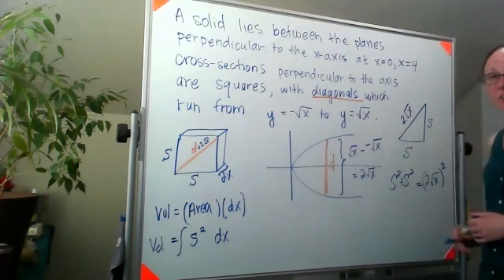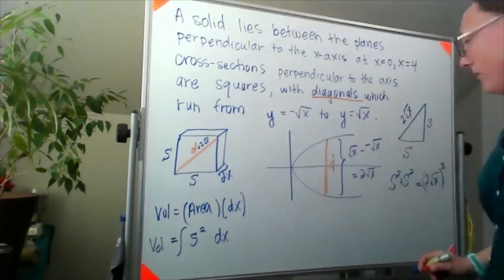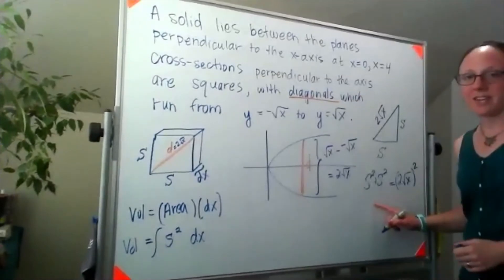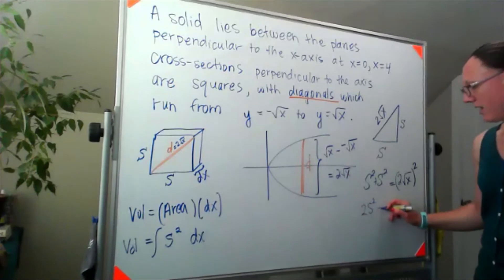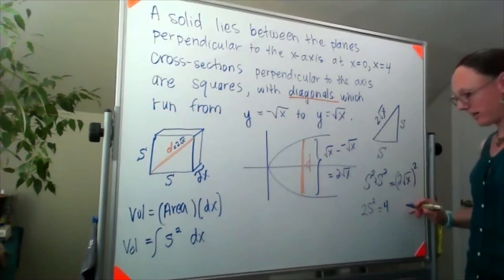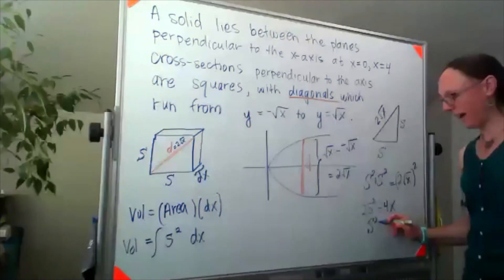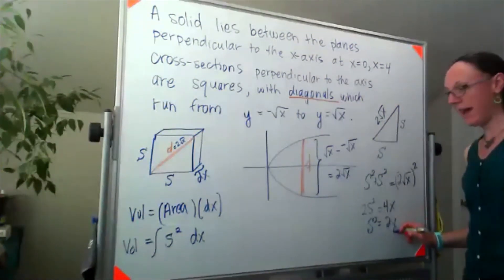Now I can simplify this. S squared plus s squared gives me 2s squared on this side. And over here, that 2 squared will be 4, and square root of x quantity squared would give me an x. So my s squared is 2x.